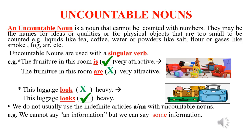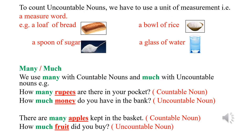We cannot say 'an information' but we can say 'some information.' I need your attention over here children. To count uncountable nouns, we have to use a unit of measurement — that is a measure word. For example, instead of saying a bread, it is right to say a loaf of bread. Similarly, a bowl of rice, a spoon of sugar, a glass of water.